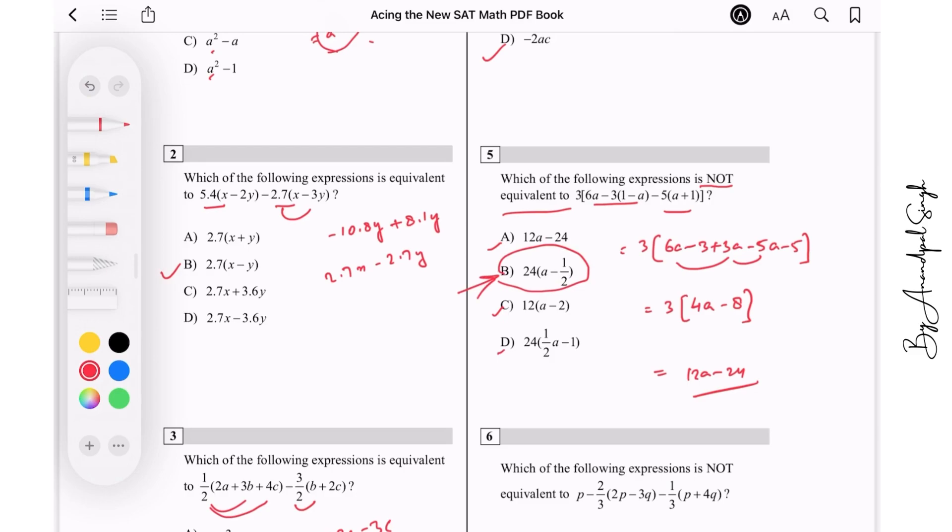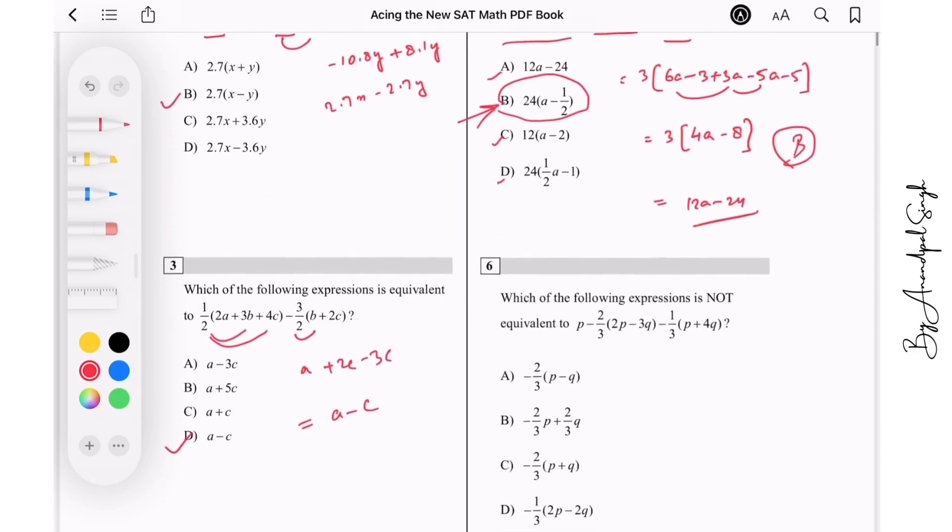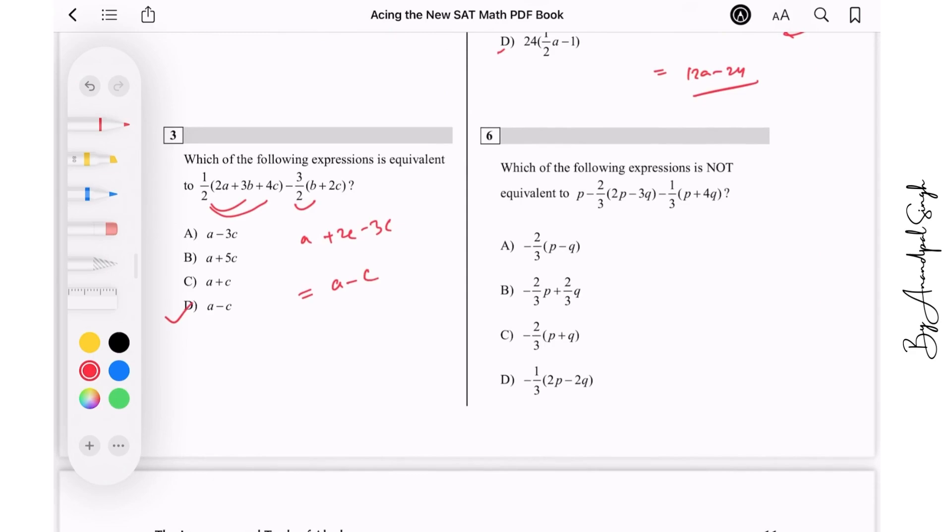Again in question number six, which of the following is NOT equivalent to this? So p - 4/3(p + 2q) - 1/3(p - 4q). So when I simplify this I get p - 4/3 p - 8/3 q - 1/3 p + 4/3 q. And minus 2/3 p, and then we have 2q minus this, so minus 8/3 q + 4/3 q, so minus 4/3 q. So minus 2/3 p + 2/3 q, that's the answer number B, option number B.